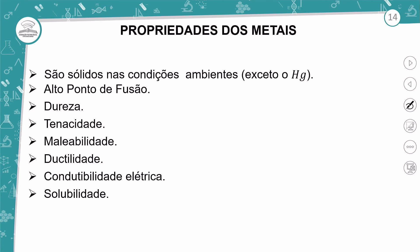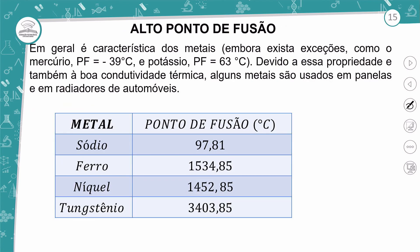Algumas propriedades dos metais: em sua maioria são encontrados no estado sólido, exceto o mercúrio, que na temperatura ambiente é líquido. Eles apresentam sempre alto ponto de fusão, dureza, tenacidade, maleabilidade, ductilidade, condutibilidade elétrica e solubilidade. O alto ponto de fusão é uma das características que a gente visualiza nos metais em geral — com exceção do mercúrio, cujo ponto de fusão é -39°C, e do potássio, que é 63°C — todos os outros têm ponto de fusão bem elevado.